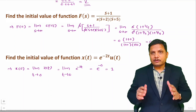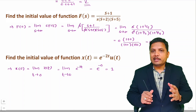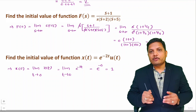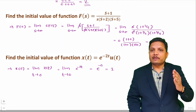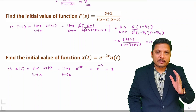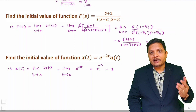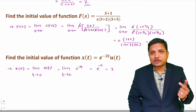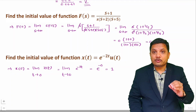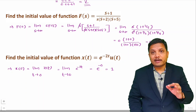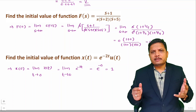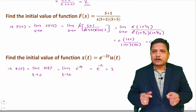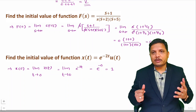To summarize: in the time domain, initial value uses t tends to 0 and final value uses t tends to infinity. In the Laplace domain, for initial value s tends to infinity and for final value s tends to 0 — and remember to always multiply s by F(s) when applying these theorems. I hope you have understood this. Thank you so much for watching this video.